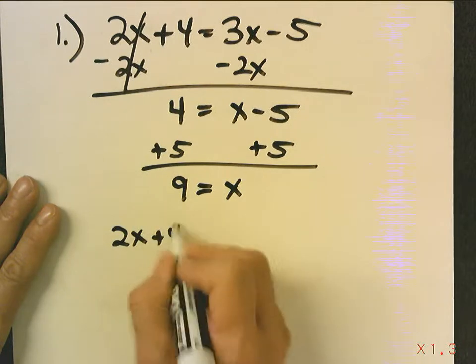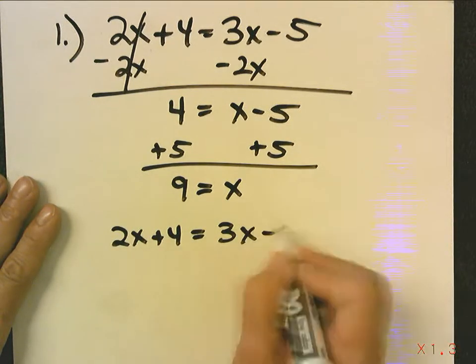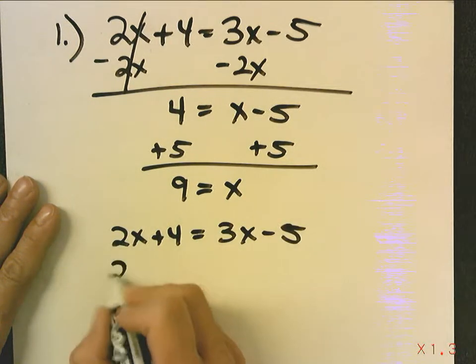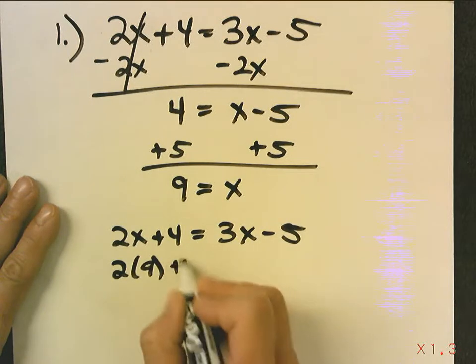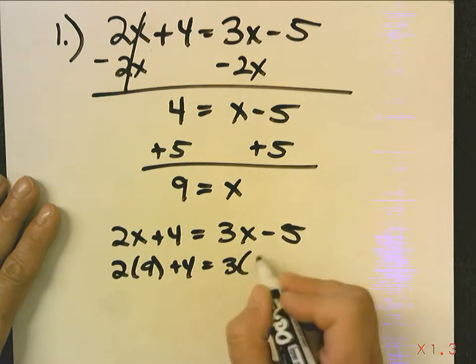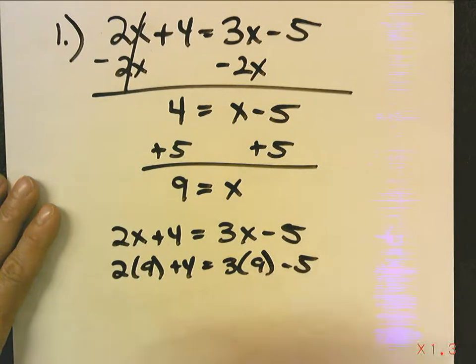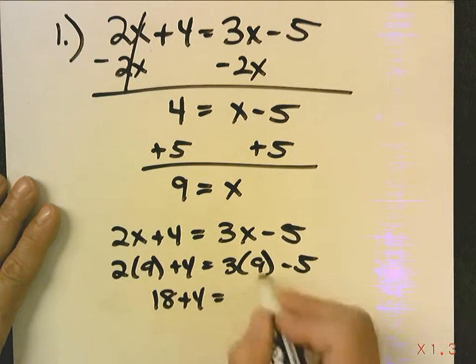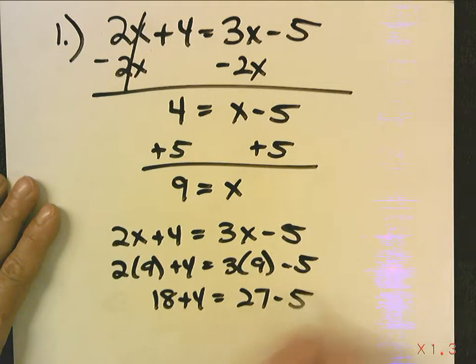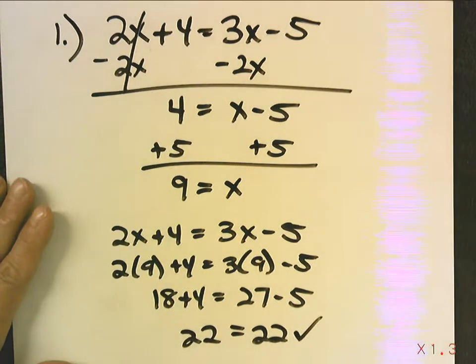So now I'm going to rewrite my equation and do a check. When I do my check, wherever I see an x, I'm going to put a 9. Now I'm actually going to do the math. 2 times 9 is 18 plus 4, 27 minus 5. That's 22. That's 22. Check. And the check works.